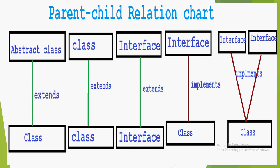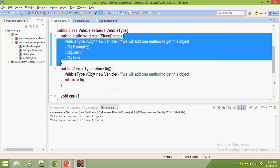There is a parent-child relation chart for interfaces. If you want to get the properties of an abstract class, you should extend that class. If you want to get normal class properties into another normal class, you use extends. If you want to implement an interface in another interface, you extend it. If you want to get the properties of an interface into a class, you should implement that interface. This is multiple inheritance — we can do multiple inheritance by implementing two interfaces.